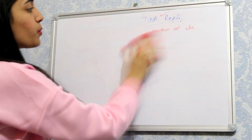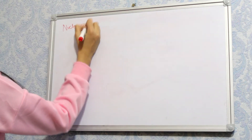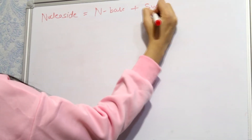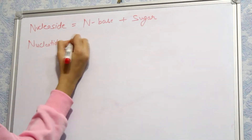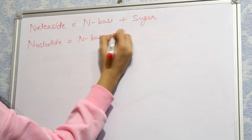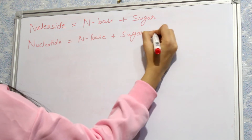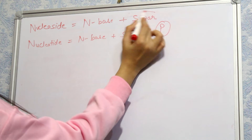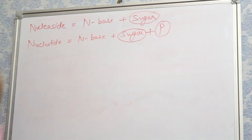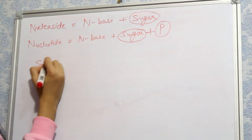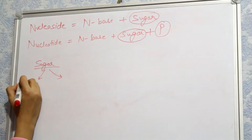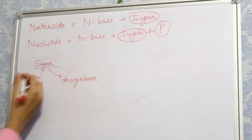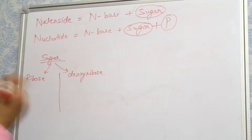The next thing we will talk about is nucleotide and nucleoside. What is the difference? A nucleoside is a nitrogen base plus sugar, whereas a nucleotide is a nitrogen base plus sugar plus a phosphate group. The sugar is common in both, so we will discuss the sugar first.